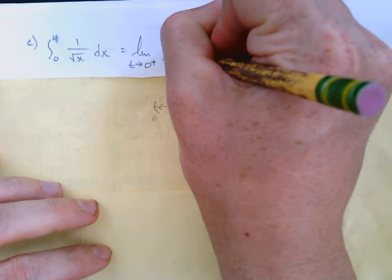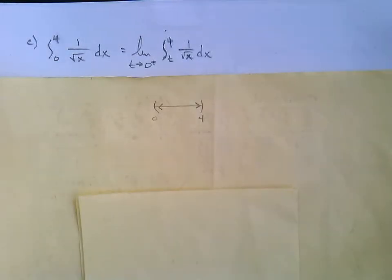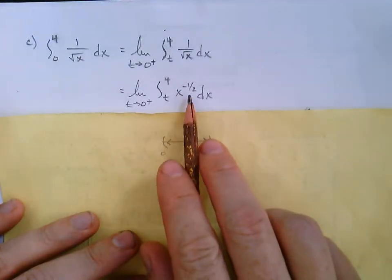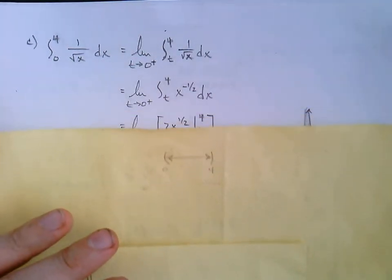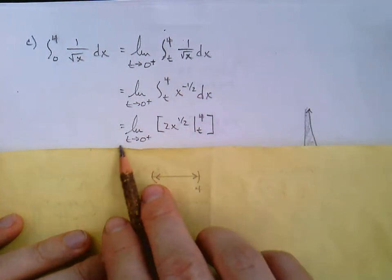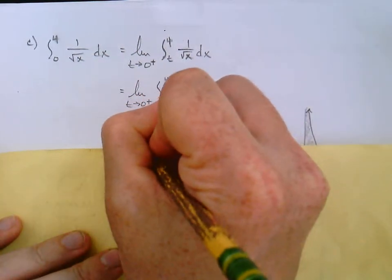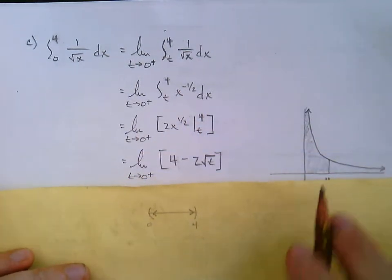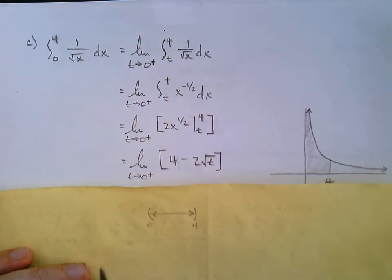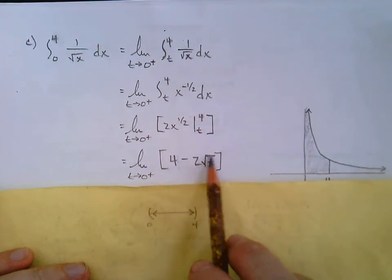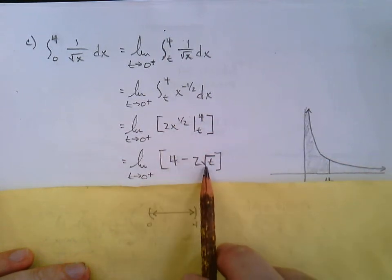It's like we're saying from 0 to 4, so we're approaching 0 this way, and we're approaching 4 that way, from the inside pushing out. So we're approaching 0 from the right. Now the 4 we're able to just plug in, so we don't need a limit there. But since we cannot actually plug the 0 in, that's the case for the limit. We'll think of it as x to the negative 1 half. From t to 4, and then antiderivative would be 2x to the 1 half with the line t to 4.